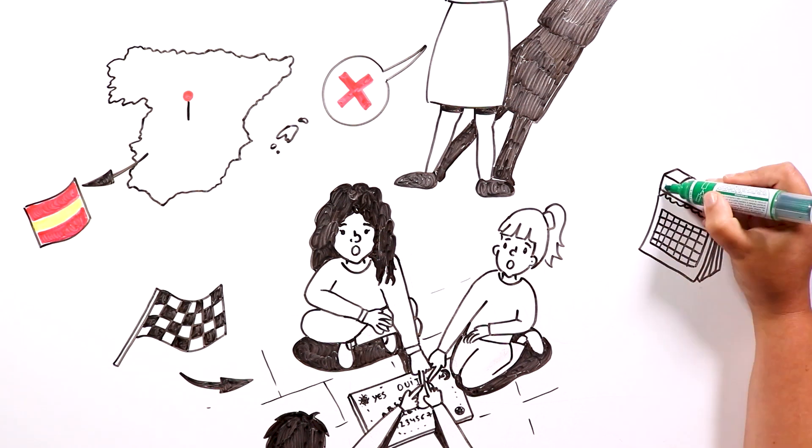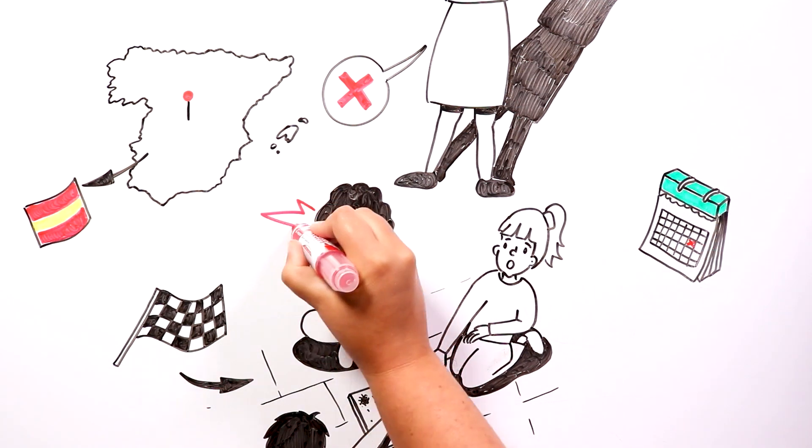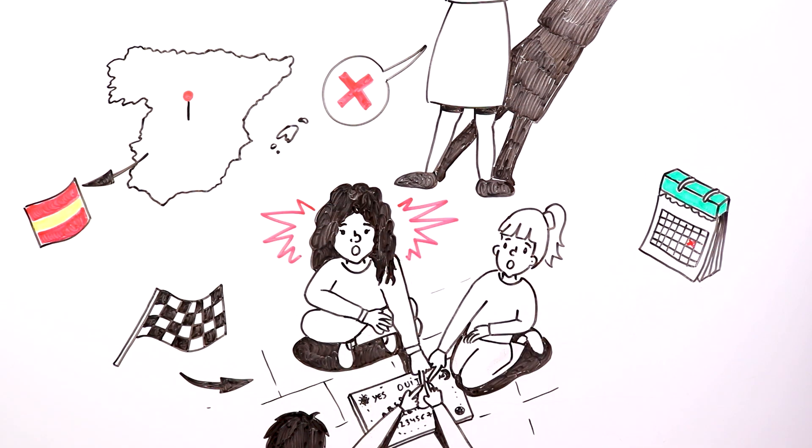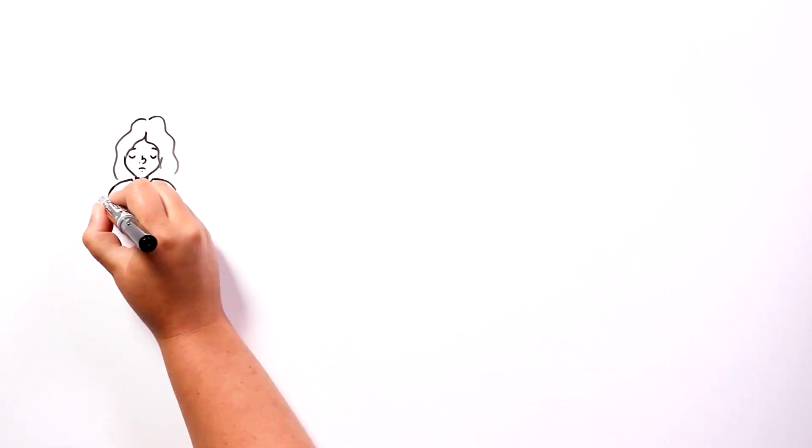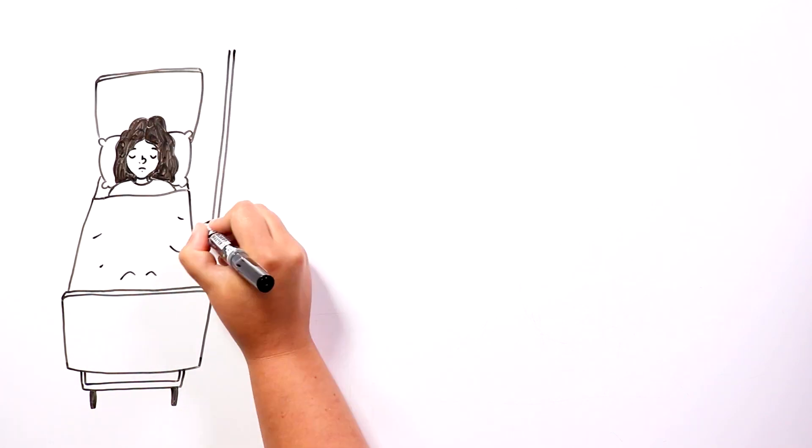And from that moment, according to Estefania's parents, she started to suffer from seizures and hallucinations. The health of the young lady gradually deteriorated, until she had to be taken to the hospital.